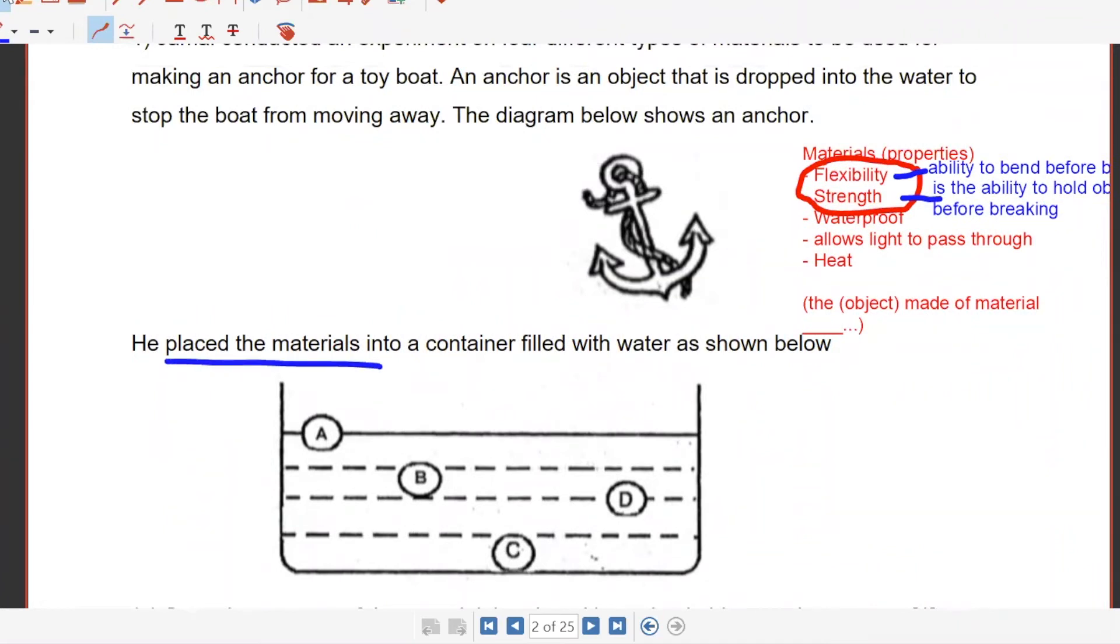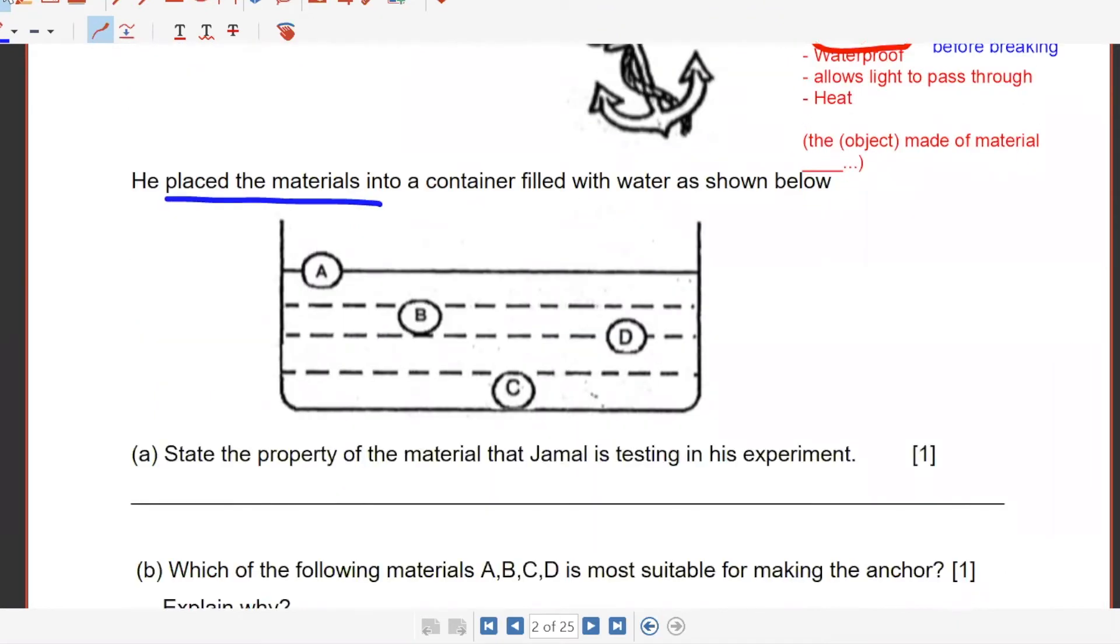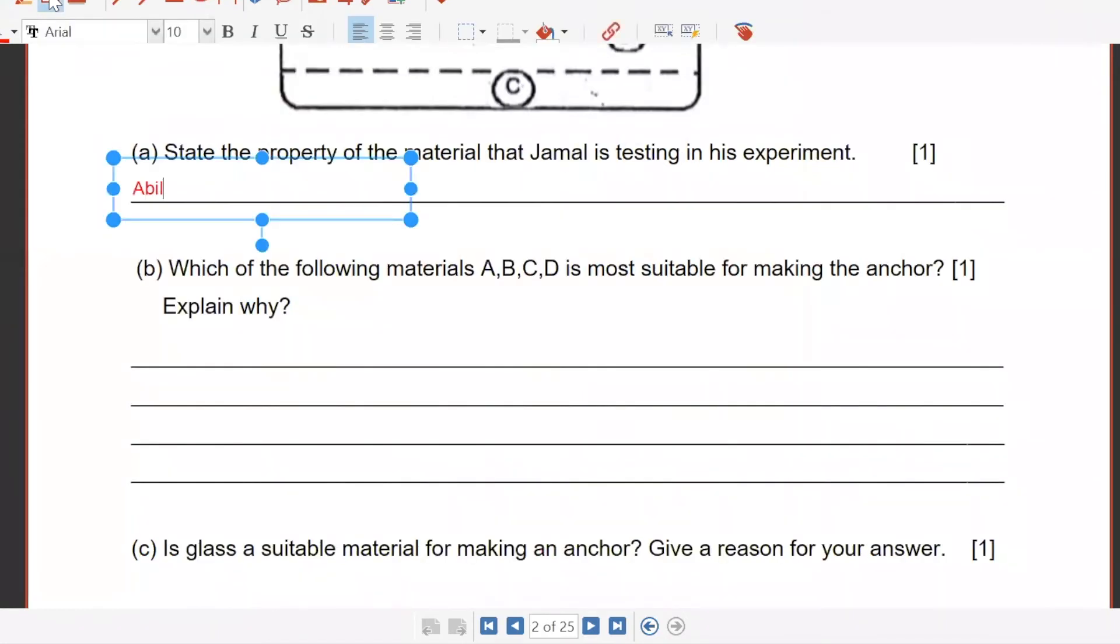Place the materials into a container filled with water. This one is testing for the ability to float or sink, or the buoyancy of material. If you say mass, it's not right because you cannot determine the mass based on whether it can float or sink. If I give you a coconut, coconut can float. But coconut very heavy. So the mass does not determine if it can float or it can sink.